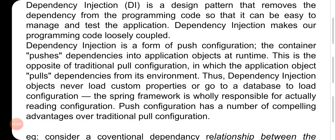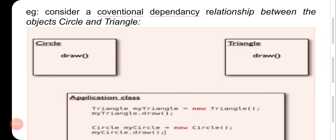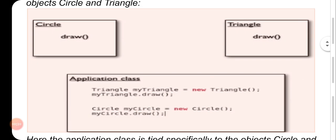Push configuration has a number of advantages. In Java code, there is a circle and triangle. This is a drawing method. The corresponding application code has a triangle object and a circle object.